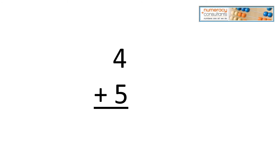Five plus four — this is a fact a lot of you may already know, and the answer is nine, but we're focused on using this problem to practice the double strategy. If we're going to use five plus five, are we going to be over by one or under by one? We know that we're going to be under, so five and five is 10, minus one would be nine.